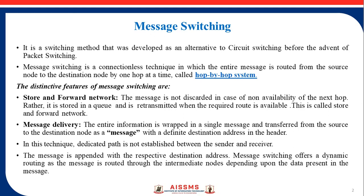Message Switching is a connectionless technique in which the entire message is routed from the source node to the destination node one hop at a time, which is called a hop-by-hop system. The distinguishing feature of Message Switching is the Store and Forward Network. The message is not discarded in case of non-availability of the next hop; rather it is stored in a queue and retransmitted when the required route is available. This is called Store and Forward Network.